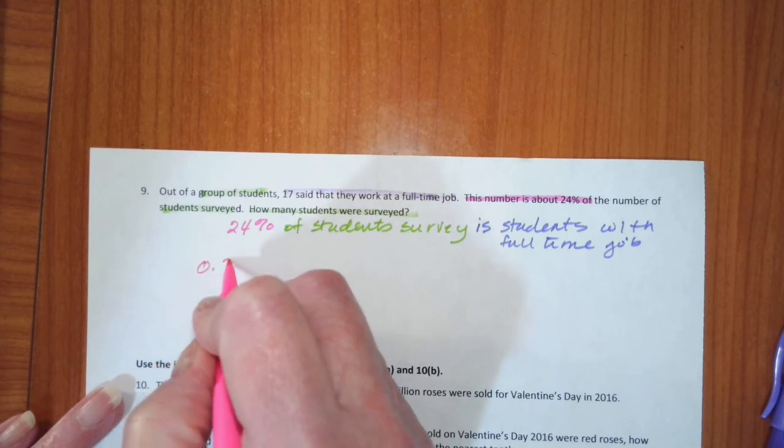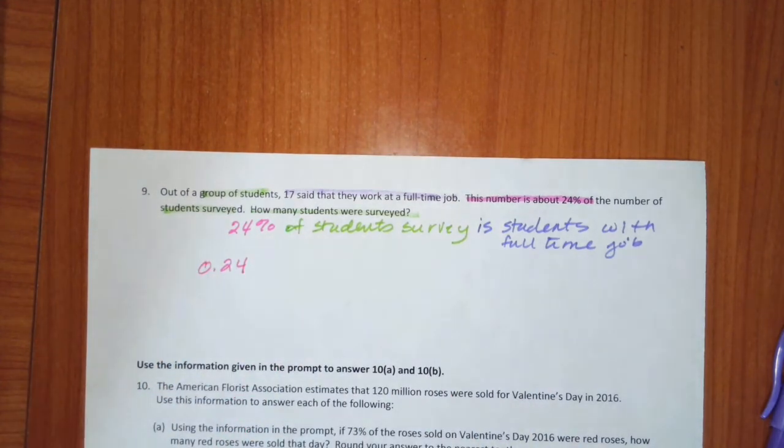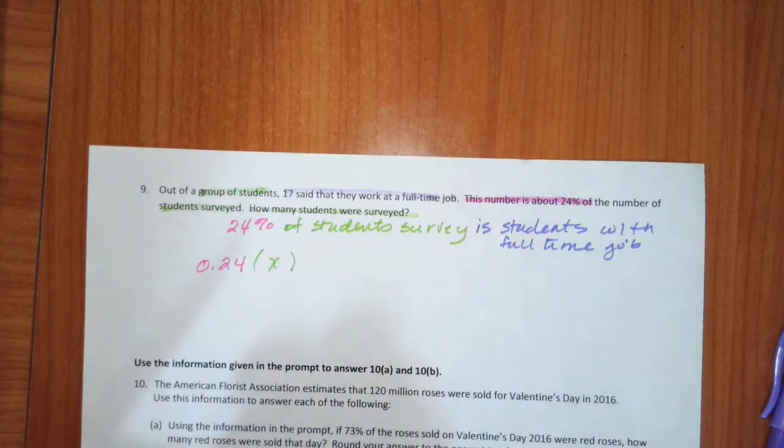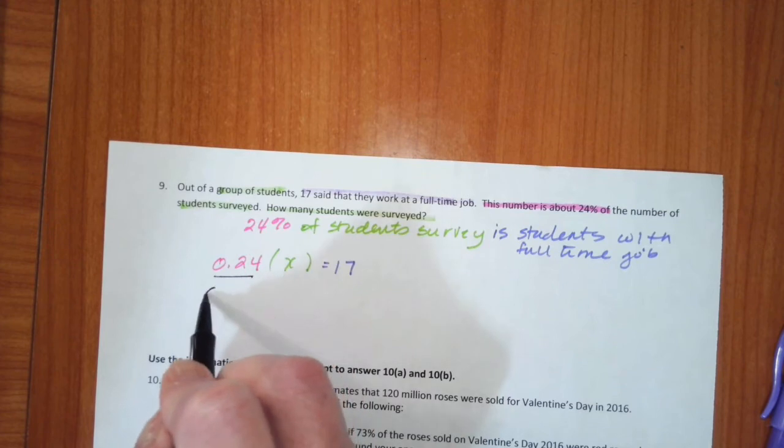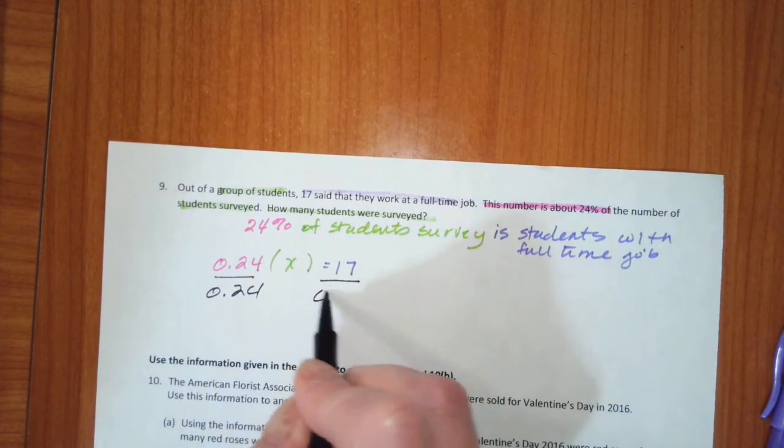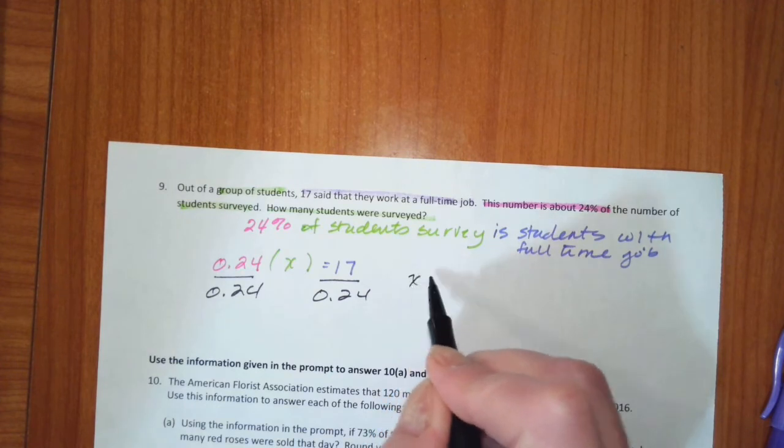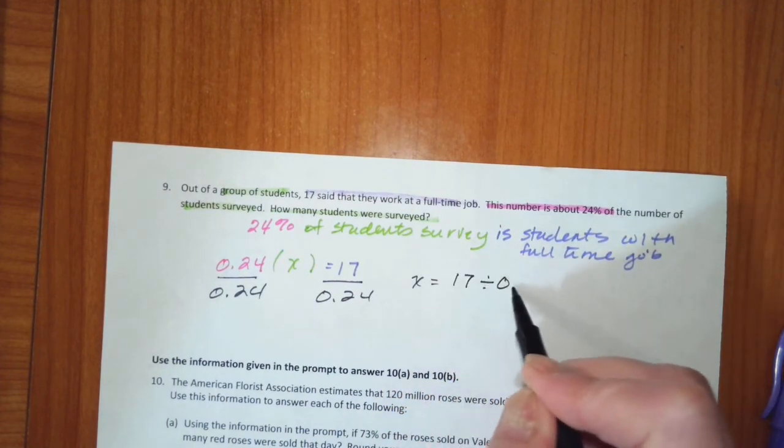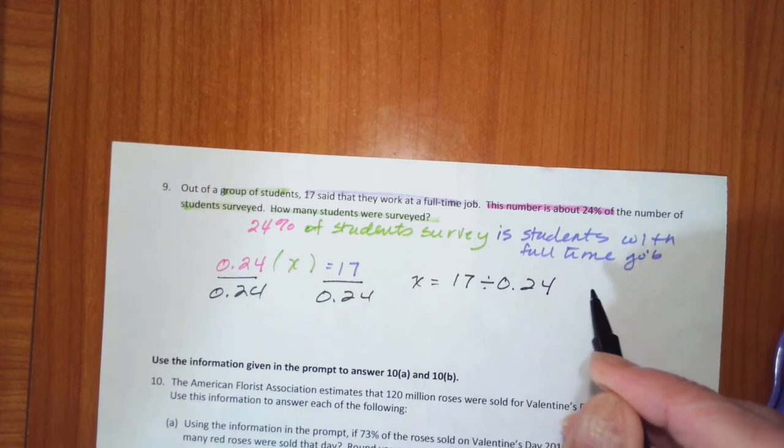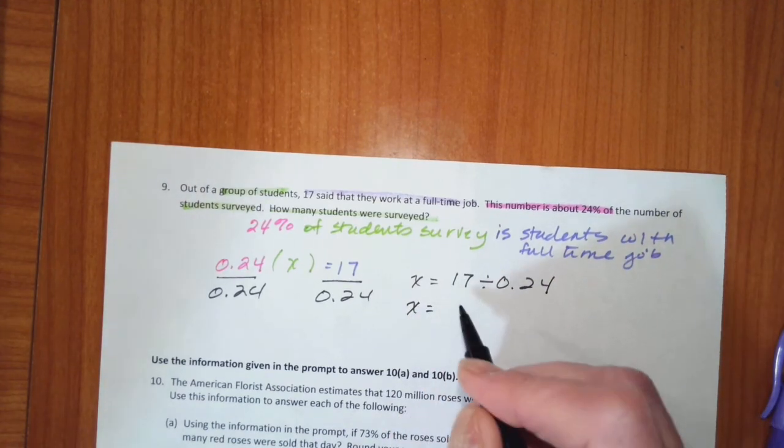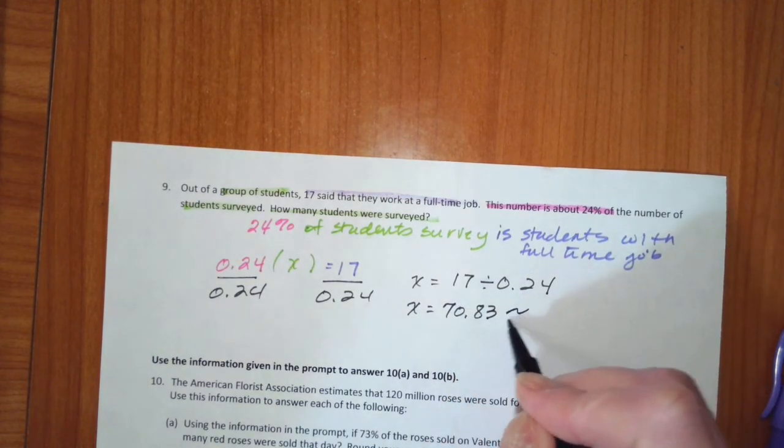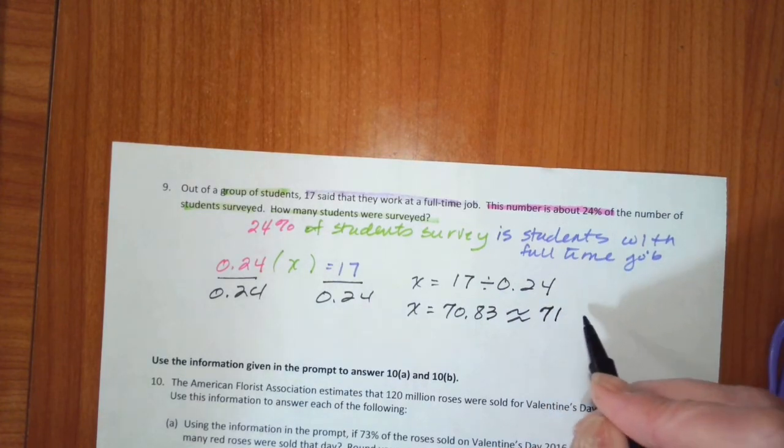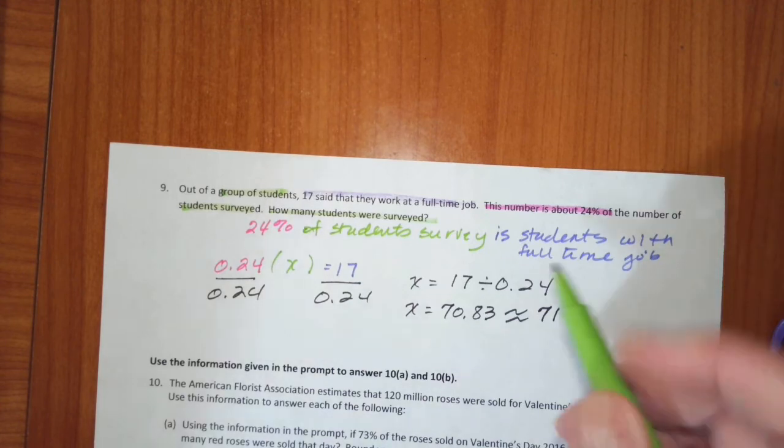So we know 0.24 times x is equal to 17. If I divide both sides by 0.24 to get the x by itself, we get that x is 17 divided by 0.24, which tells me x is 70.83, which is pieces of people. So that is going to be 71, and that is going to be the students in the survey.